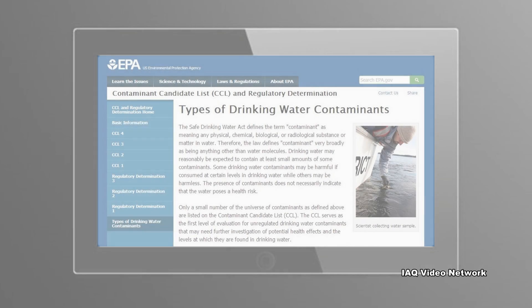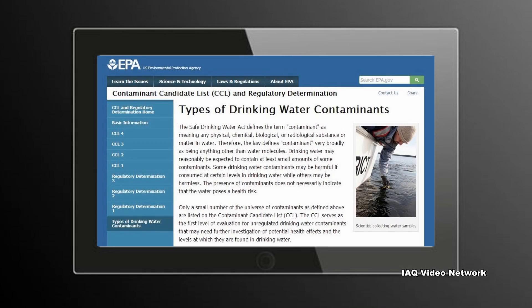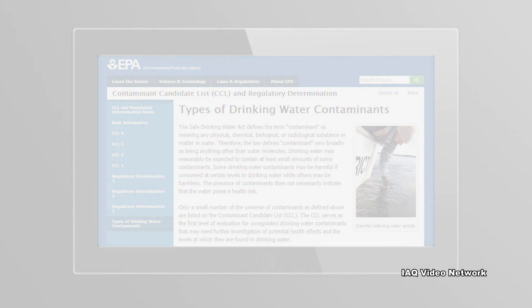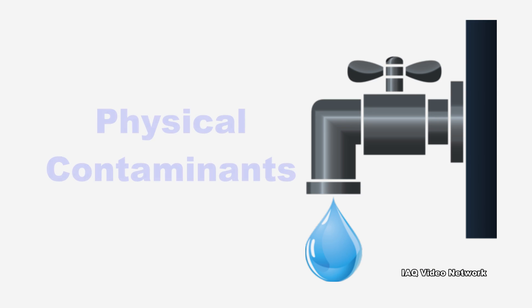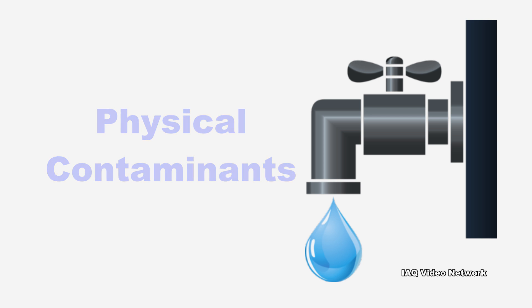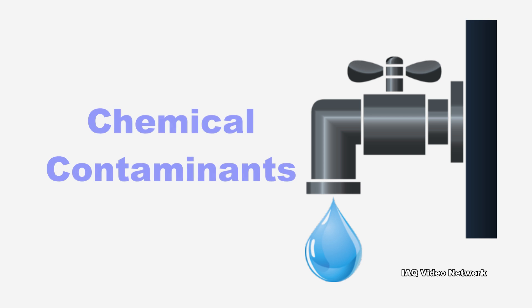The EPA provides general categories of drinking water contaminants. They include the following. Physical contaminants primarily impact the appearance or other physical properties of water. Examples include sediment or organic material suspended in water.